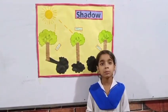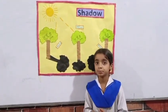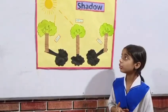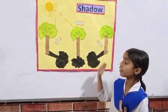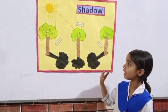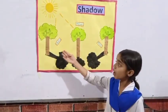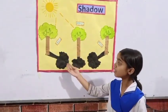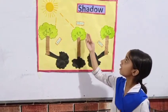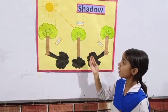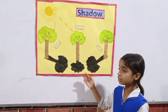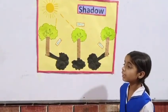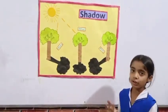The shadow is different — it is different sizes. In the morning, it is full size. In the afternoon, it is half size — it is a short shadow. In the evening, it is full size.